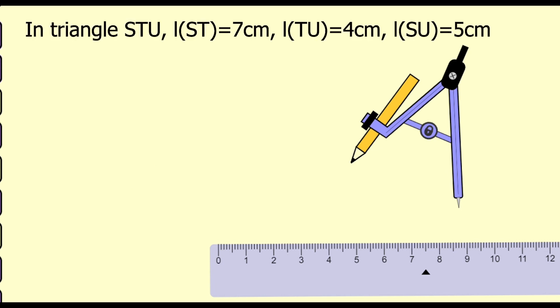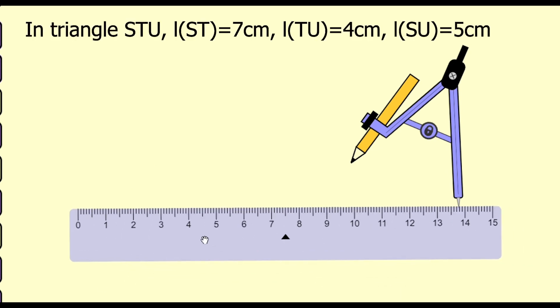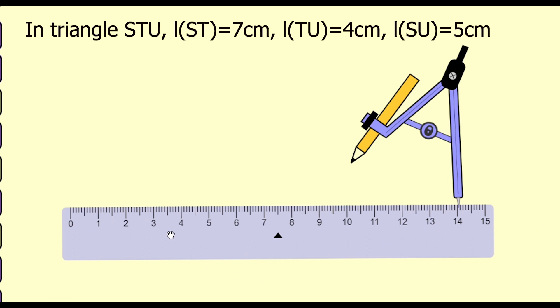Now the second question. In triangle STU, ST is 7 cm, TU is 4 cm, and SU is 5 cm. Now draw ST of 7 cm.